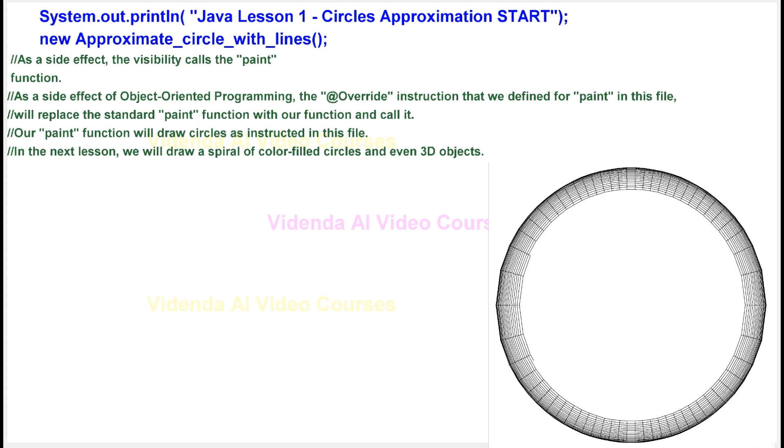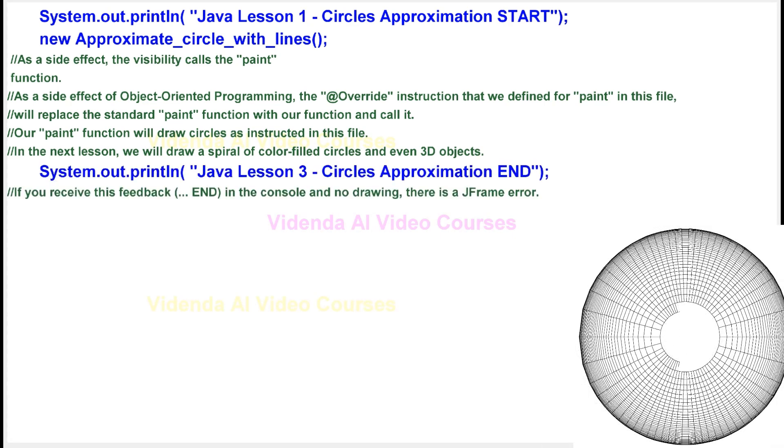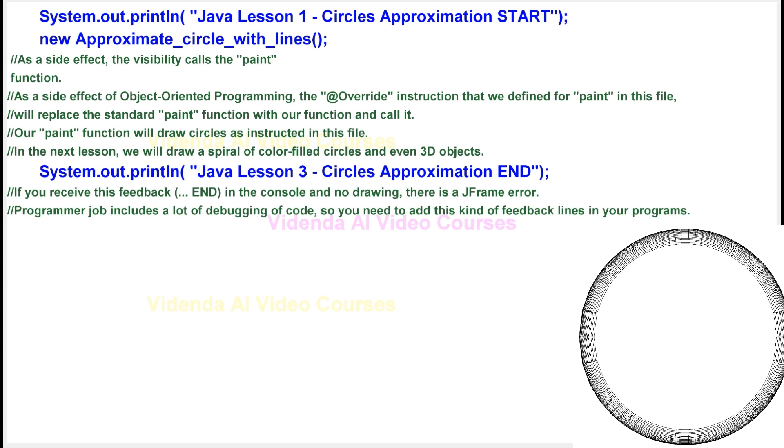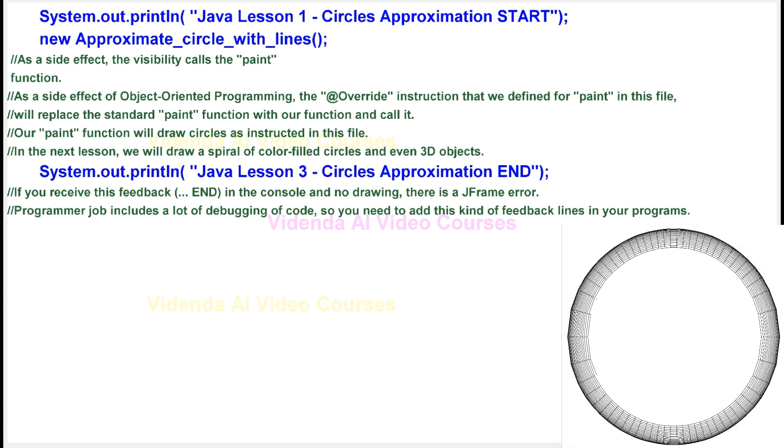In the next lesson, we will draw a spiral of color filled circles and even 3D objects. If you receive this feedback, END, in the console and no drawing, there is a j-frame error. Programmer job includes a lot of debugging of code, so you need to add this kind of feedback lines in your programs.